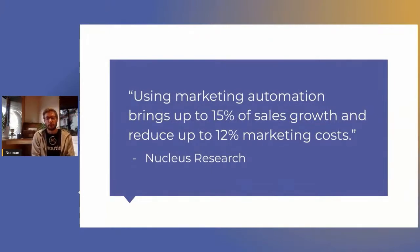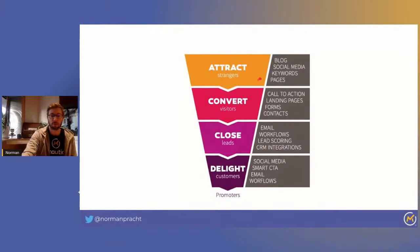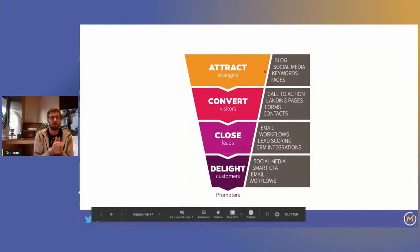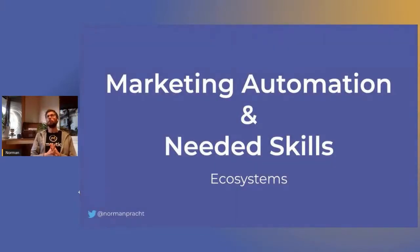According to a survey by Nucleus Research, using a marketing automation software increases sales by 15% while reducing the cost of marketing by 12%. This means that by making the link between traffic generation and the CRM, you are able to generate more leads, and each contact costs less — because while investing the same amount in driving visitors to your website, you are able to convert more of them.